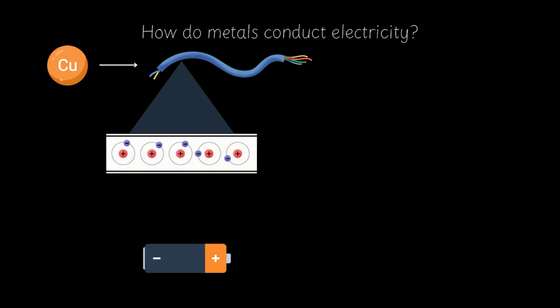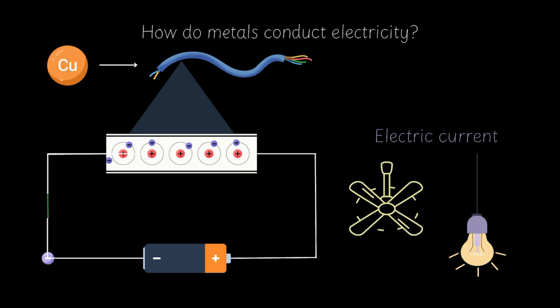The battery's job is to simply push these electrons around the circuit once the switch is closed. This flow of electrons that we are seeing here is what we call electric current. And this is what makes our appliances work. Our fans spin and our bulbs glow.